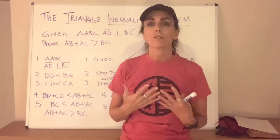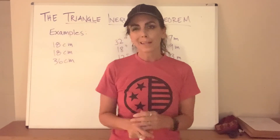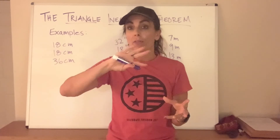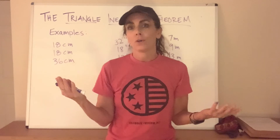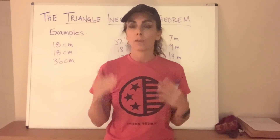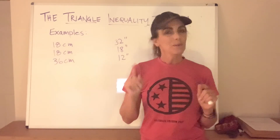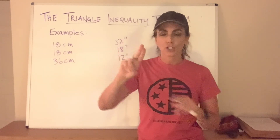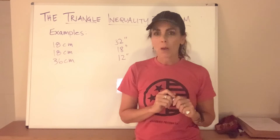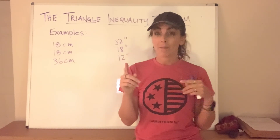Now let's look at examples of how to use that theorem to decide whether given lengths will form a triangle. One thing to note: we only proved one combination, but you could do all three iterations. In practice, you want to check all three combinations: A + B > C, B + C > A, and A + C > B. However, there's a pattern — when given three side lengths you only really need to compare one particular sum to the third side. Look for the pattern as we work through examples.